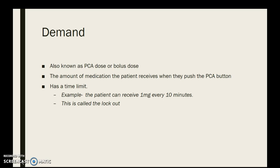Demand is also known as a PCA dose or a bolus dose. The patient presses the button and they can get the medication. There is a time limit — the doctor or nurse practitioner, when they order, will say the patient can receive so many milligrams or micrograms for so many minutes. The example here is the patient can receive one milligram every ten minutes. When the patient presses the button, a clock starts. They can press the button as many times as they want in that ten minutes, but the machine will not give them any medication until ten minutes have passed. This is called a lockout — it could be every five, ten, twelve, fifteen, or twenty minutes, depending on what the prescriber orders.